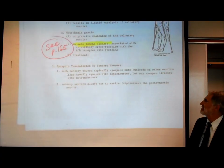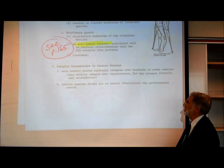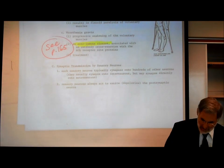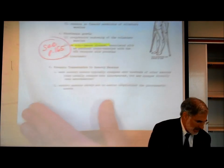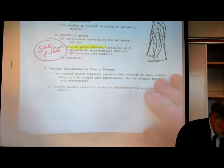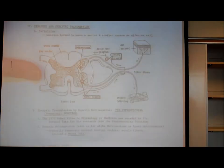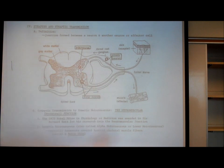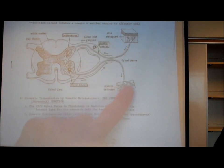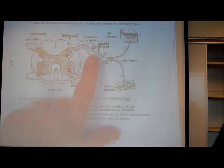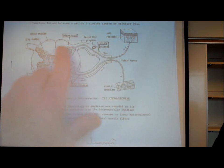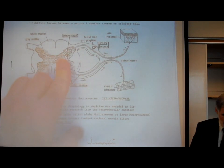I want to talk now about synaptic transmission by sensory neurons. Let's go back to our picture on page 52. We've been focusing on the neuromuscular junction right here — that's the synapse. Now we want to look at how the sensory neurons synapse onto the interneurons in the central nervous system.